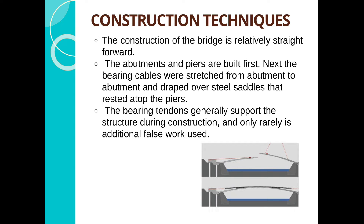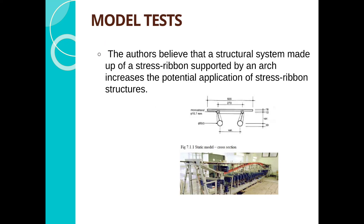Construction Techniques: the construction of the bridge is relatively straightforward. The abutments and piers are built first. Next, the bearing cables are stretched from abutment to abutment and draped over steel saddles that rested atop the piers. The bearing tendons generally support the structure during construction, and only rarely is additional falsework used.